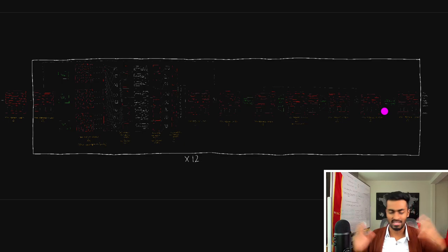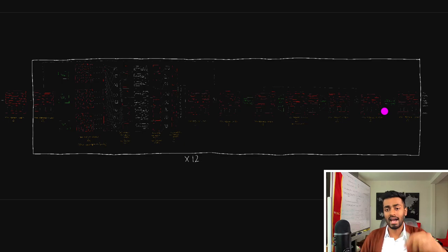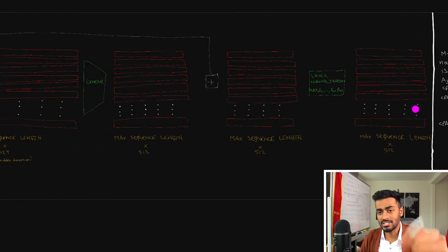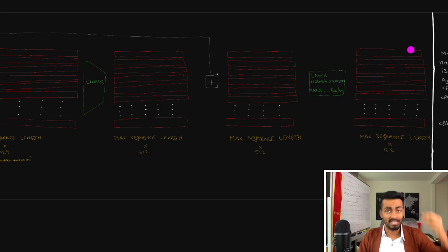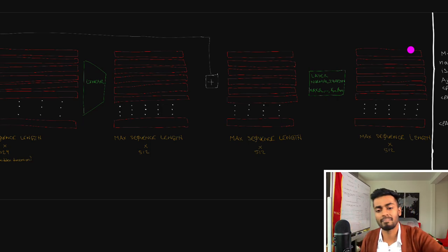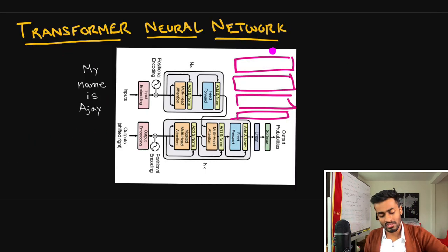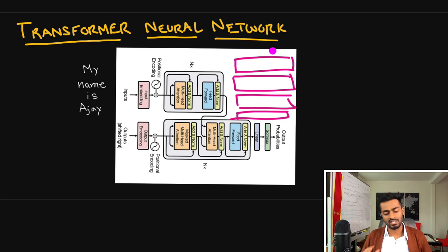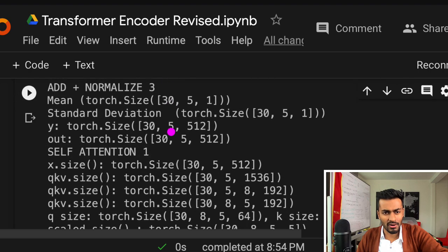Once we have all of these vectors, we pass them into the decoder, which assists in translation from English to, say, French. That wraps up the explanation of the encoder architecture. I hope all of this made sense.